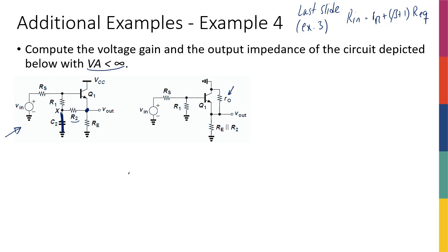What kind of amplifier is this? The input is connected to the base and the output is taken from the emitter — so this is a common collector amplifier. For a common collector, we know the gain is going to be (beta + 1) times Re, divided by (beta + 1) times Re plus R_pi.